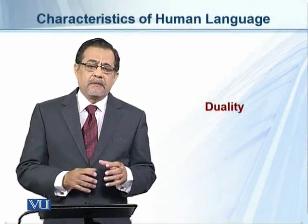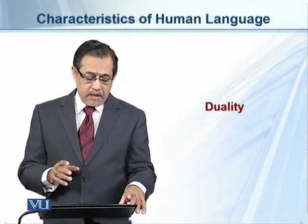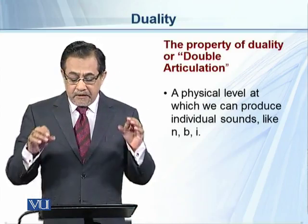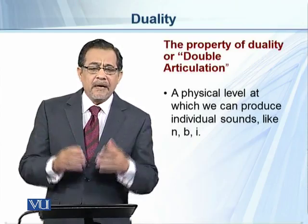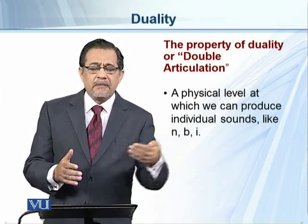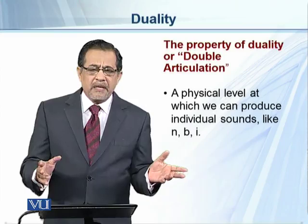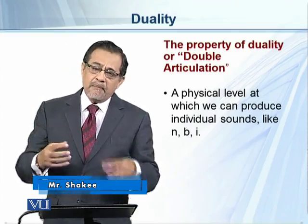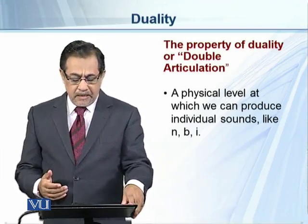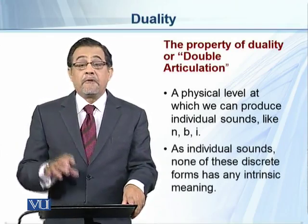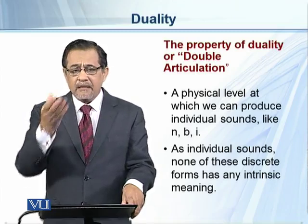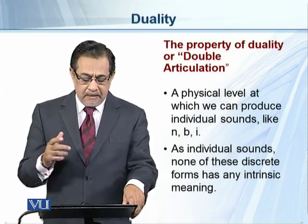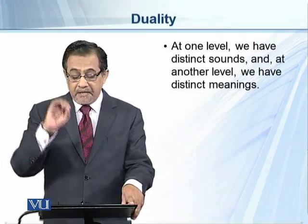Among the different characteristics of human language, duality is one. It means that we communicate at two levels — double articulation. At the physical level, we can produce individual sounds, for example b, u, n. These are individual sounds, like the letters a, b, c, d. At one level, these are individual sounds and they don't have any meaning.